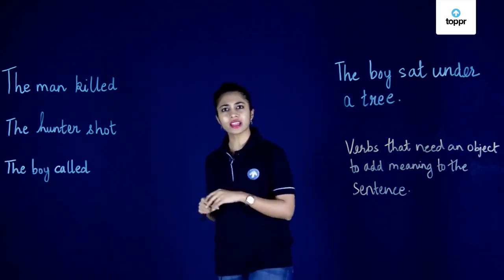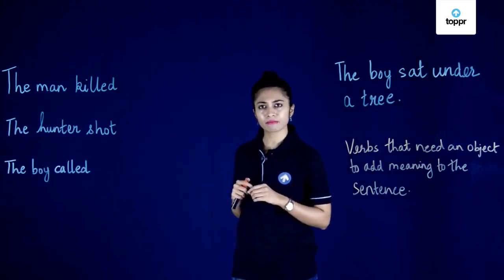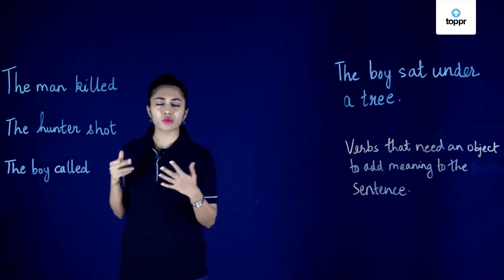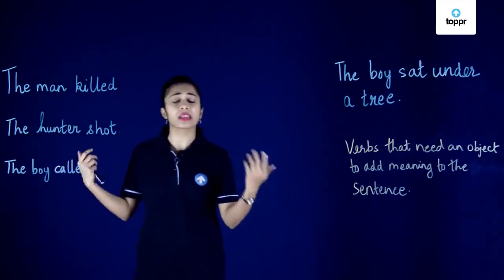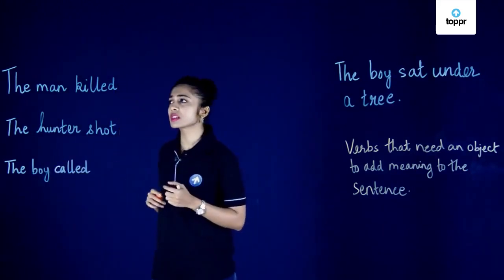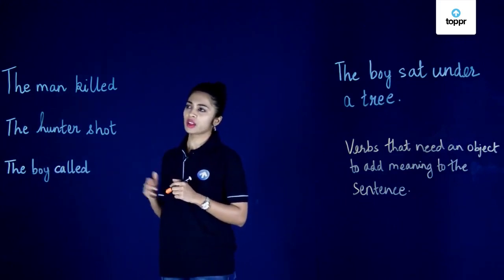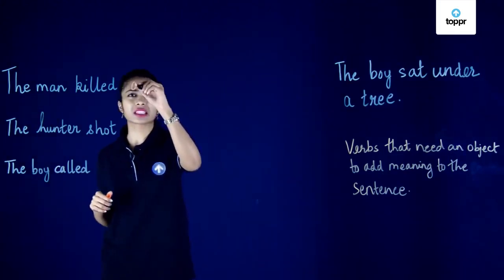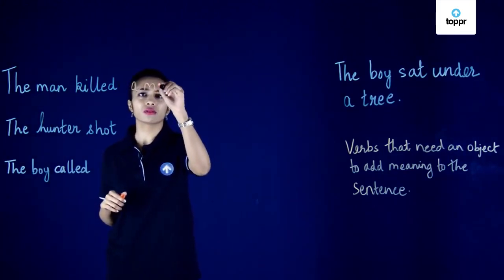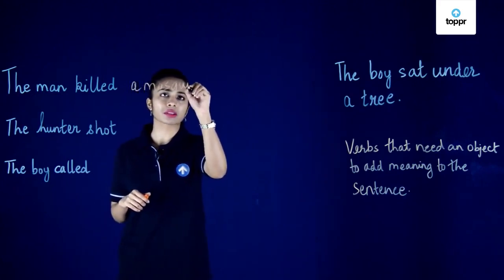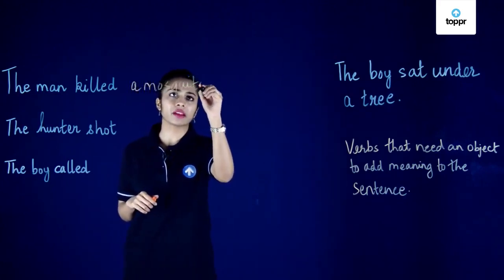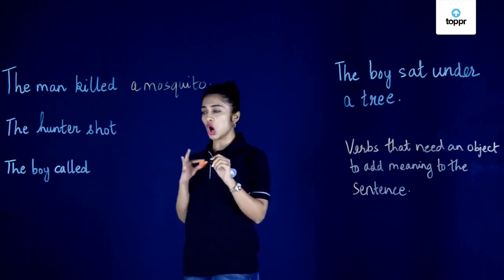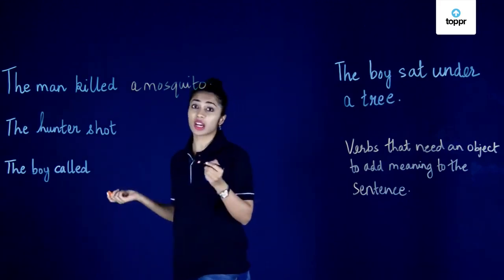These sentences seem a little incomplete. We need to add some meaning to them to make them complete and more meaningful. So let's say the man killed a mosquito — probably the mosquito bit him and after which the man killed him. The hunter shot a tiger.